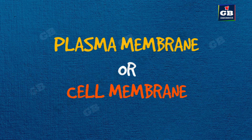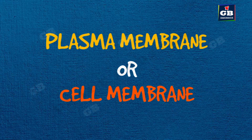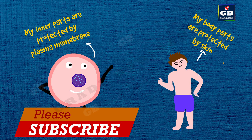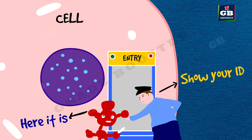The plasma membrane, or cell membrane, protects the inner components of the cell — just like how your skin protects the inner parts of your body. It controls the entry of materials into the cell and the exit of materials outside the cell.